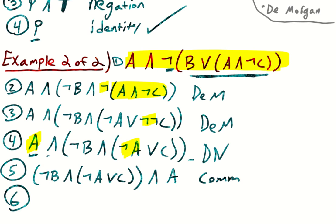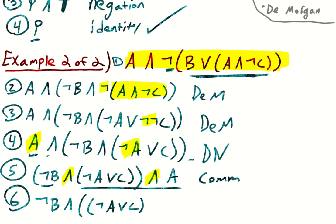We have conjunction, conjunction — we can move around these parentheses to do a regrouping. We really want to group these things together because we want that a and not a to be together, and we can get this not b by itself. So we can say: not b and ((not a or c) and a), by the associative rule.